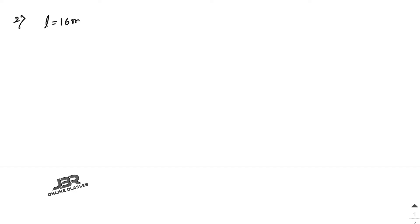Number 2: A rectangle is 16 meters by 9 meters. So length equals 16 meters and breadth equals 9 meters. Find the side of a square whose area is equal to the area of the rectangle. The area of the rectangle is length into breadth, that is 16 into 9, which is 144 square meters.